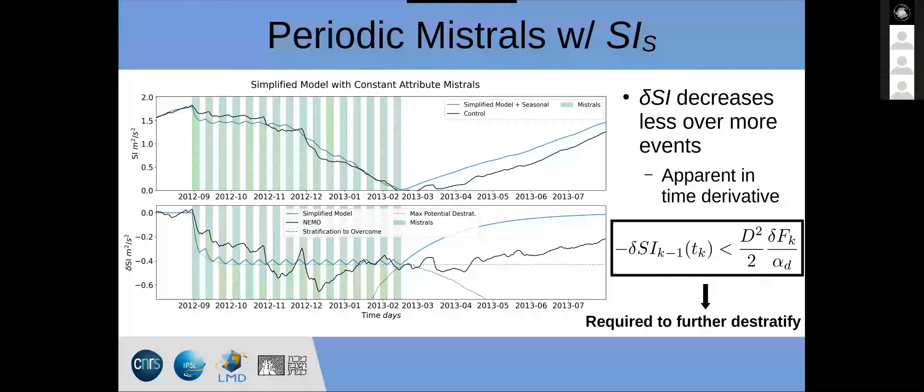Question from audience: On the periodic mistral events — is the story that if you have a repetition of mistral events at a high enough rate, you'll have an accumulation of the effects of individual events? Response: Increasing the frequency of the mistral does cause more destratification. However, the difference is very small. There is the influence of delta tau — the frequency term — in the equation. But there's a limit: with events approaching a constant mistral, you just eventually stop destratifying further, because the slope during each consecutive event becomes less steep.